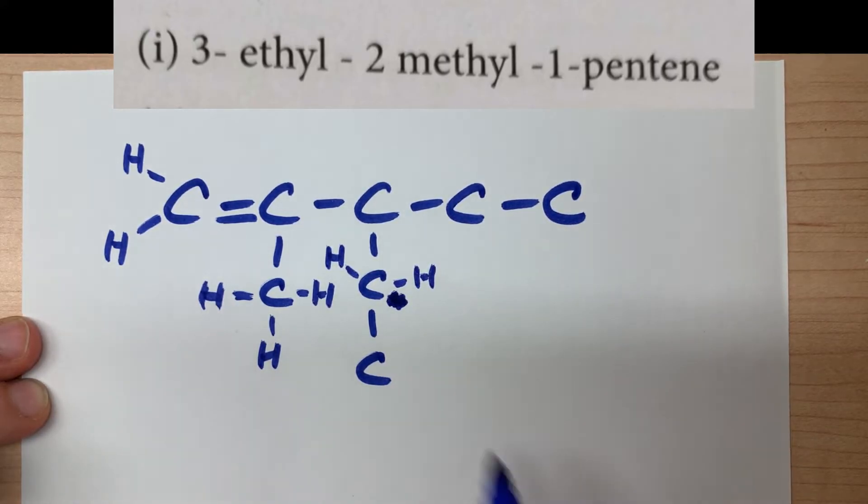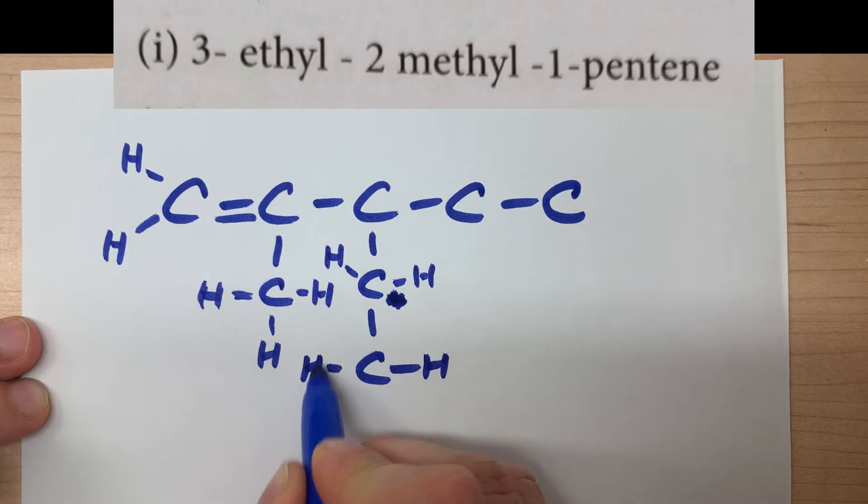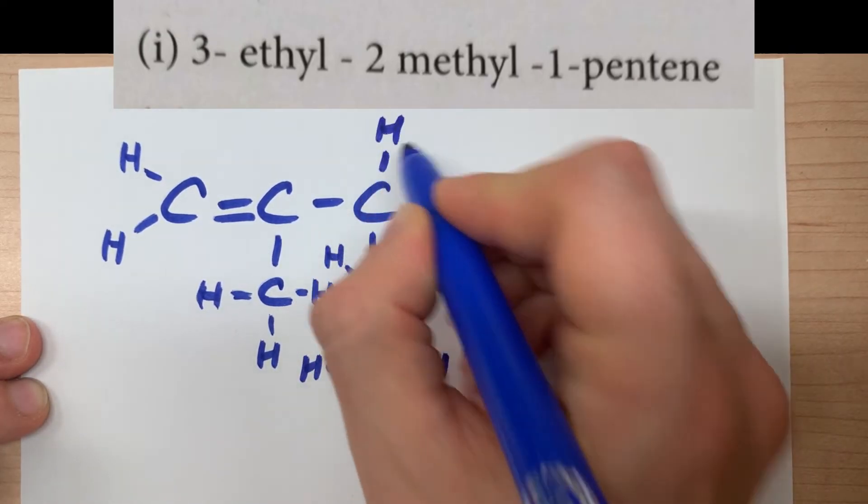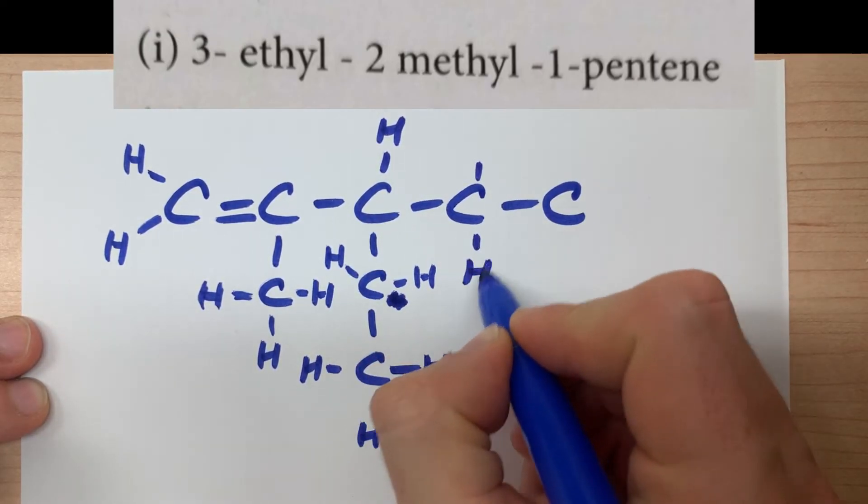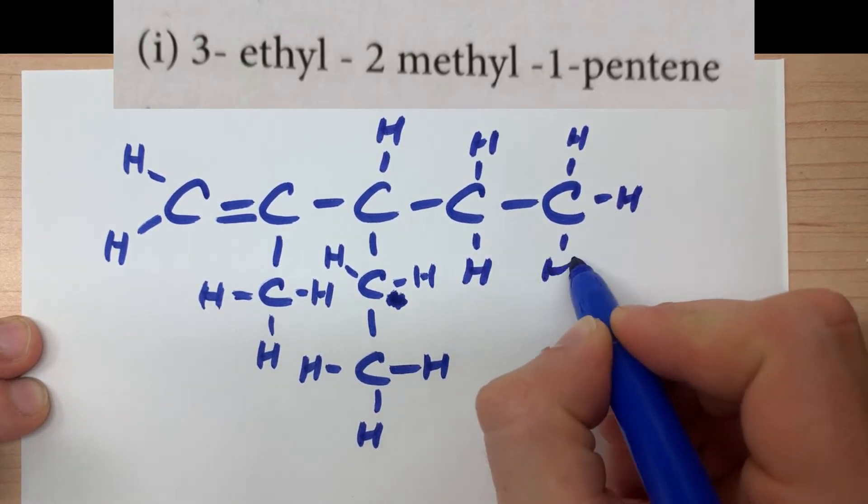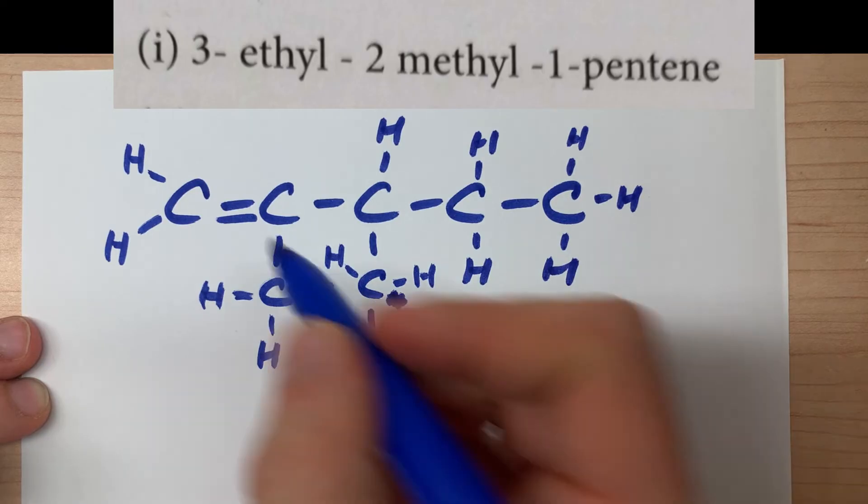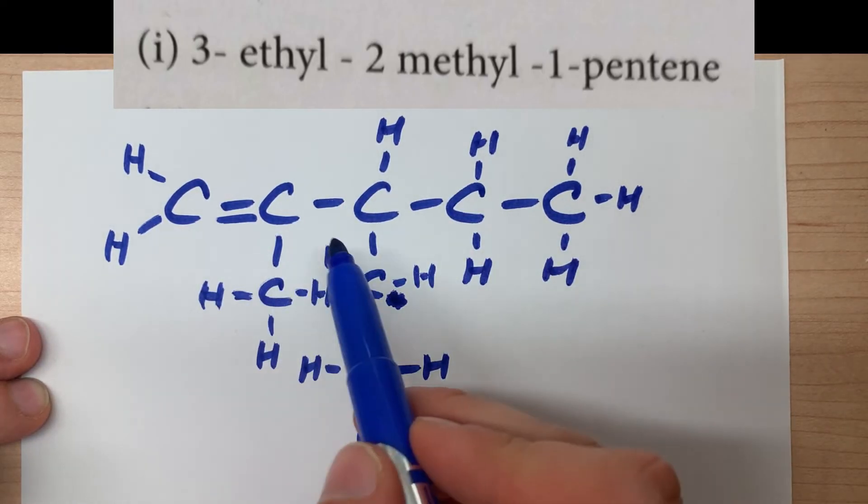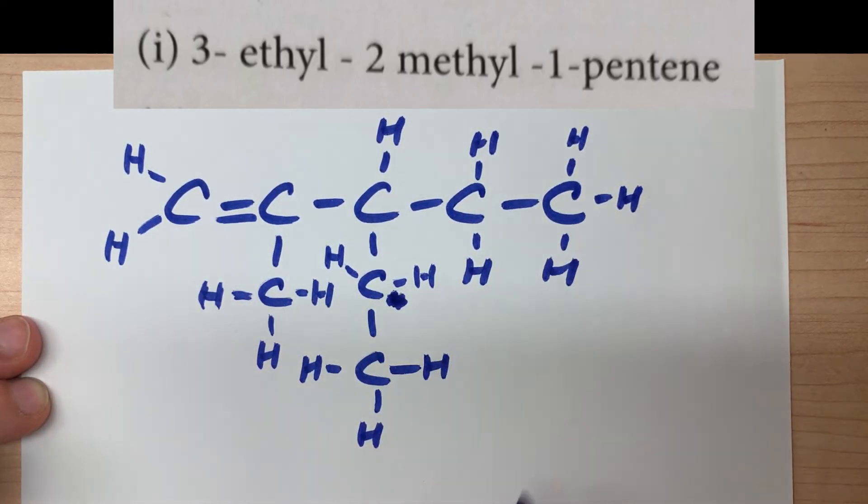Oh, only two hydrogens there. This carbon needs three hydrogens. This carbon needs one extra. This carbon needs two extra. And this carbon needs three extra. This is your structural diagram for 3-ethyl-2-methyl-1-pentene.